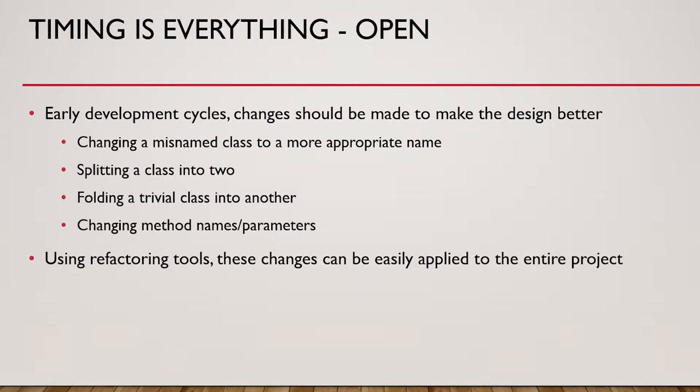If you're in the early stages of development, you can make changes to a class. You can change the name of the class. If you have a poorly named or misnamed class, we certainly want to fix that early, not postpone it and have to deal with it later. Changing methods, adding parameters — these are all things that can be done in early development stages because we can use the refactoring tools within our integrated development environment.